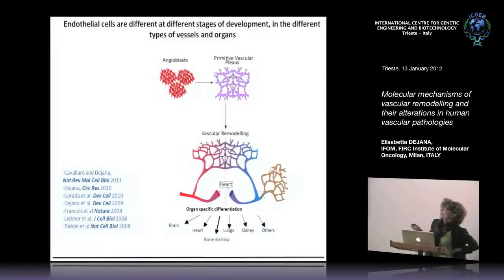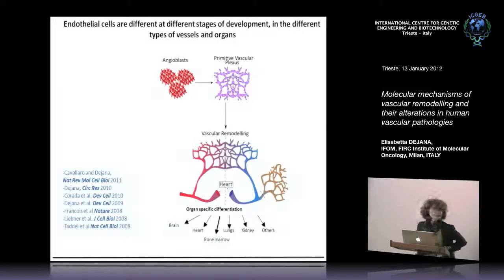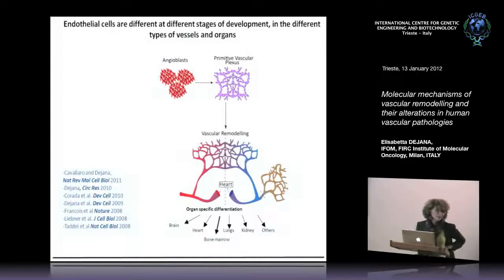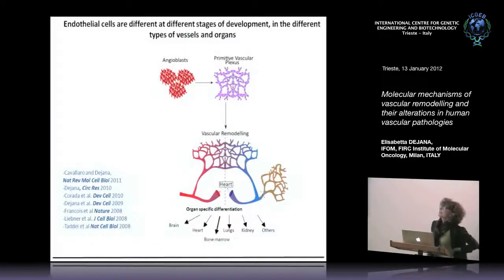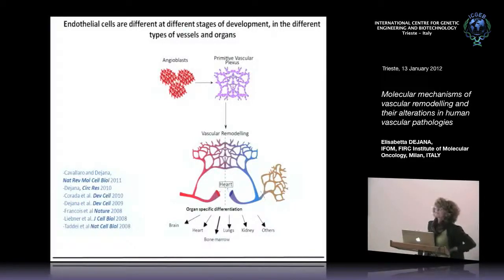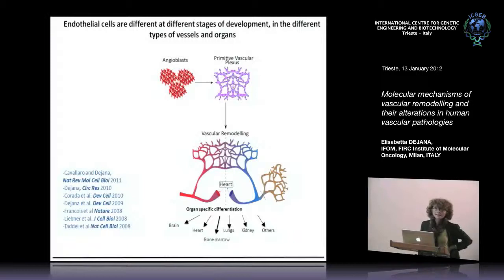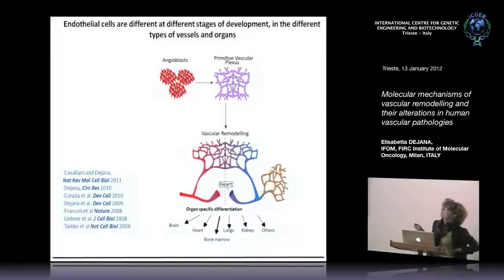You can distinguish different steps in endothelial differentiation that go from progenitors called angioblasts, which differentiate at very early stages of embryonic development — around seven and a half days in the mouse. These cells undergo a first step of differentiation and get organized in what is called the primitive vascular plexus.